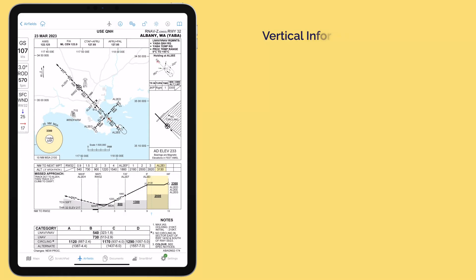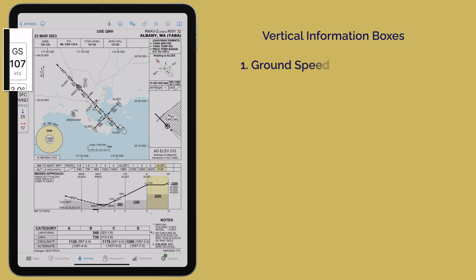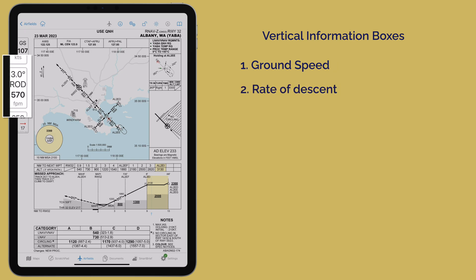Let's explore the new vertical information boxes on the left, designed to lower your workload by providing useful information. At the top, your current GPS ground speed is prominently displayed. Under that, you'll find the rate of descent required to achieve the specified approach angle at your current ground speed.